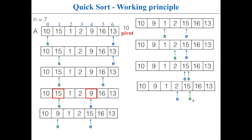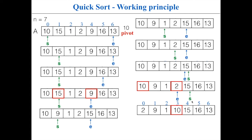Now both start and end iterators are stopped, but they have crossed each other. In this case you should not swap these two elements — instead, swap the pivot element with the element pointed to by the end iterator. When the iterators cross, it means partitioning is done. This is the left sub-array and this is the right sub-array. The elements in the left sub-array are less than the pivot, and the elements in the right sub-array are greater. This completes partition 1, and the pivot element has moved to its correct position.